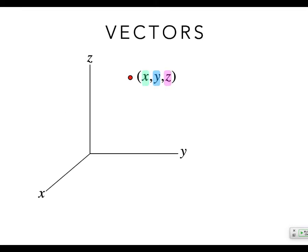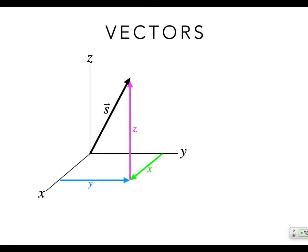Vectors are special numbers because they also have a direction. The nice thing about that is if you put a vector in three-dimensional space, you can break it into x, y, and z. What we mean by breaking it into x, y, and z is that you can decompose the vector into three components. All of those components are perpendicular to each other, so that means they all behave separately.